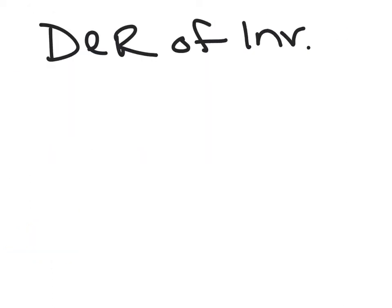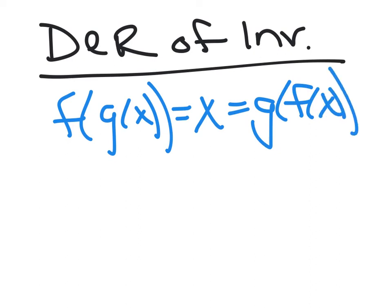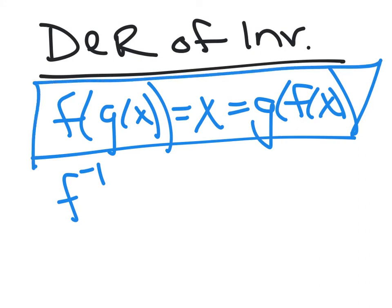Alright, the last one I just threw in here because this was so bad on our last test, I couldn't believe it. Okay, derivative of the inverse. How do you know something is a derivative of the inverse question? Well, first and foremost, you better recognize the definition. f of g of x equals x, which equals g of f of x. Okay, if they don't use the symbol for inverse, f inverse, you have to recognize this means the derivative of the inverse. This is the inverse formula.